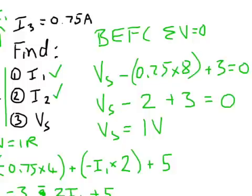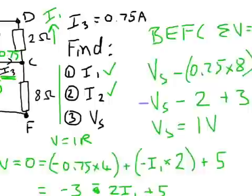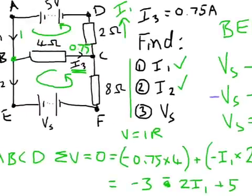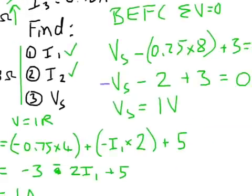One minor error that I've just noticed that I've made is with VS. VS should be negative in this case. Because if we go back across, we can see we've travelled across that way, which is from positive to negative. So that means we're going in the opposite direction to conventional current. That means it should be a minus over here.